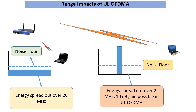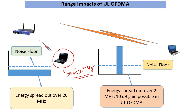How can OFDMA help with respect to range? If we take a station's transmission, remember that before 11ax the absolute minimum bandwidth with which a station could transmit was 20 MHz. So for example, take an IoT station with 0 dBm power, which corresponds to about 1 milliwatt — that power gets divided over this 20 MHz minimum bandwidth.